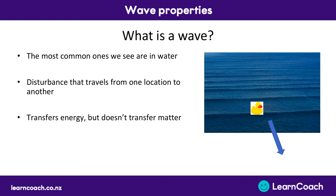An important thing about waves is that they transfer energy, but they don't actually transfer any matter. In this case, the matter we're talking about is the water itself. So although the ocean waves are travelling towards us, if we look at the individual drops of water in the ocean, they're not actually moving from A to B — they're staying in the same place. The thing that's transferred from A to B is the energy of the wave. If we put a rubber duck on one of the waves and looked at how it moved, we would notice it going up and down. It wouldn't actually travel towards us, because matter is not transferred from A to B in a wave — it's just the energy.